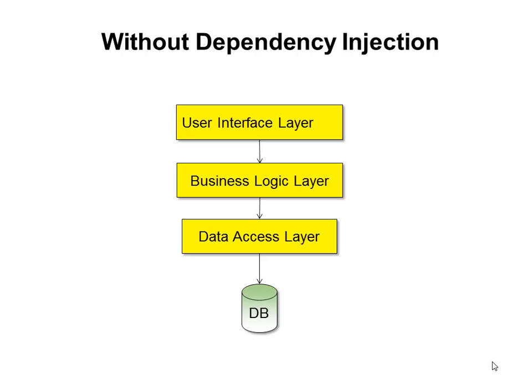Most applications in today's world are built in layers: user interface layer, business logic layer, and data access layer. The user interface layer has a reference directly to the business logic layer, and the business logic layer has a reference to the data access layer. When it comes to testing, we should be able to test each layer by itself. We can definitely test the data access layer by itself, but when we try to test the business logic layer by itself we will not be able to do so because there is a tight coupling between the business logic layer and the data access layer.